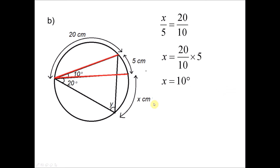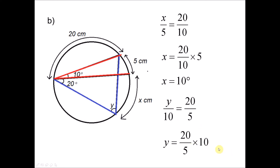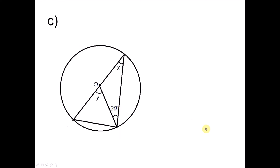After finding X, we find Y. Y is subtended by the minor arc of 20 centimeters. Using the same ratio: Y divided by 10 equals 20 divided by 5, since Y is subtended by the 20 cm arc and 10° is subtended by the 5 cm arc. Solving this gives Y equals 40 degrees.